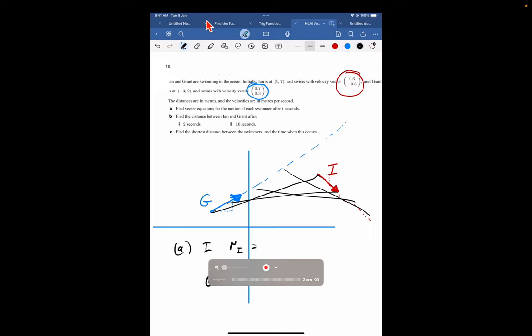And then we add on blocks of seconds times by the velocity vector. Now, is that going to make sense, right? Well, my bad. It's a positive there. And then the same for Grant. We hop out to the location negative 3, 2. We travel along to the starting position. And every second, there's a travelling of 0.7, 0.3. So there you go. There's the vector equations for the motion. Quite simple, right?